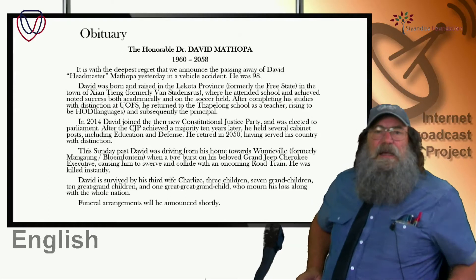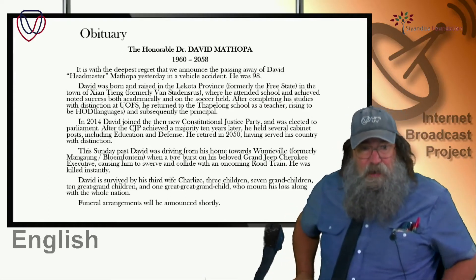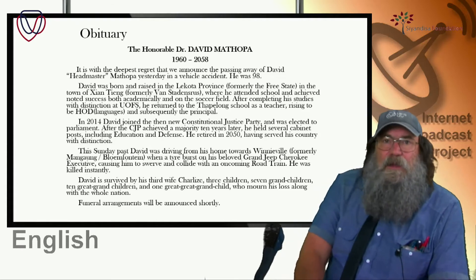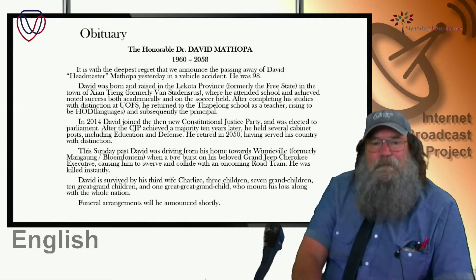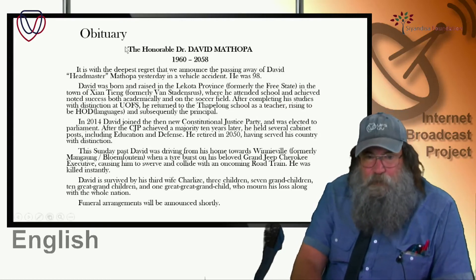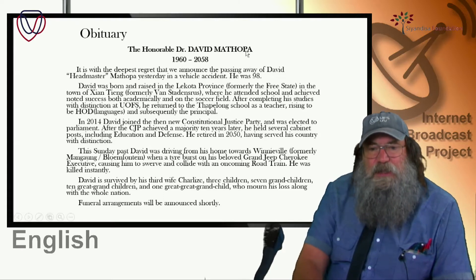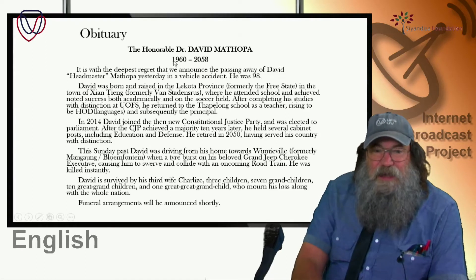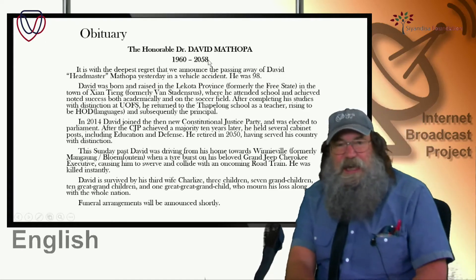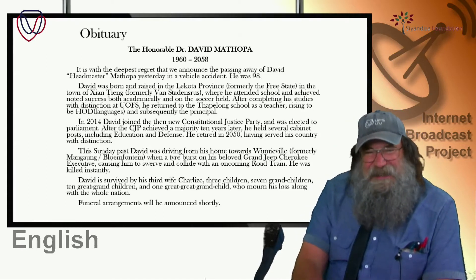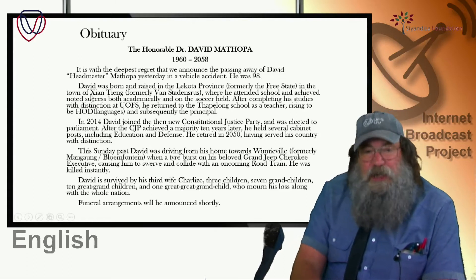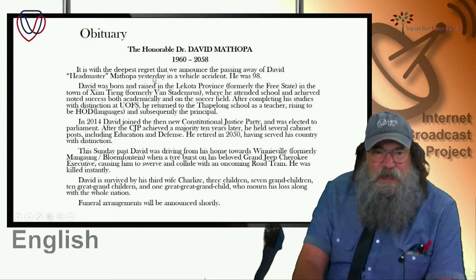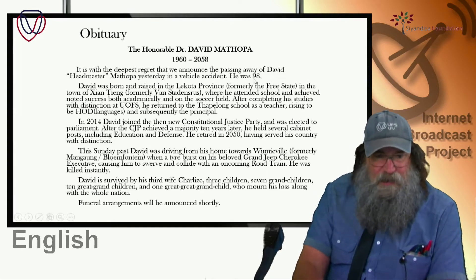Now rather than explain an obituary, I wrote one some years ago. Here is a fictional account. This will give you some idea of ideally what an obituary should be like. Now the first thing at the top there, you've got the titles and the person's first and last names. The date of birth, 1960, and the date of death, 2058. So we're looking back from a distant future. And your introduction. It is with the deepest regret that we announced the passing away of David, the headmaster, yesterday in a vehicle accident. He was 98.